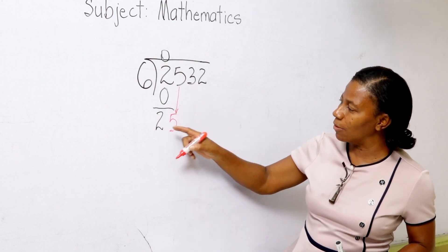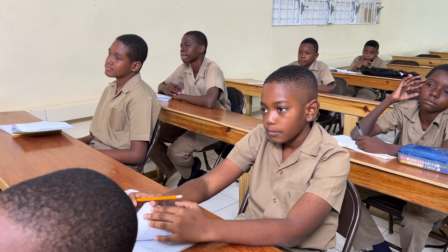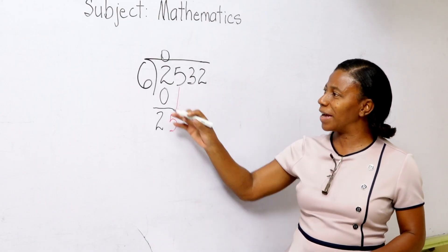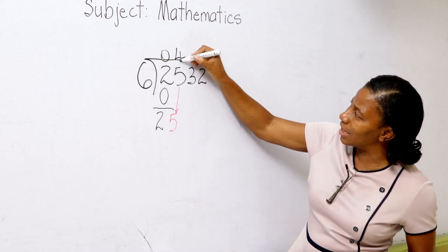So we are bringing down the 5. And what do we end up with here? 25. Excellent. And then we are going to say 25 divided by 6. And how much time can we? 4 times. Excellent.